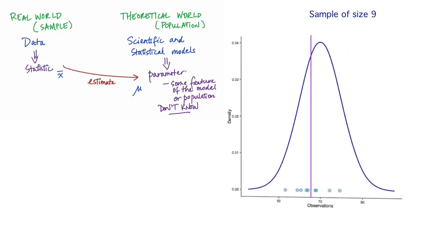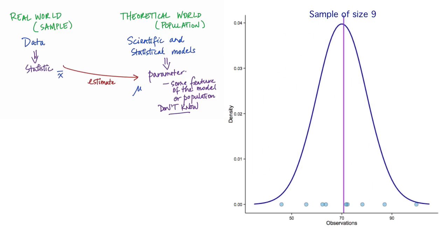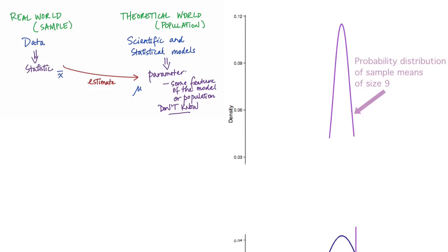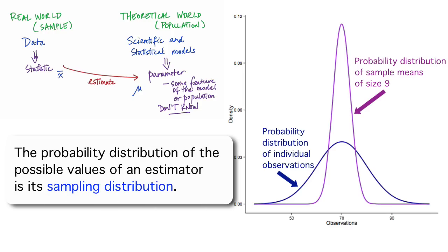Of course, if we had taken another random sample of data we'd get a different value for x-bar, and if we had taken yet another sample we'd get yet another value for the average. This purple probability distribution shows the behavior — in terms of probability — of all the different sample means that it's possible to get. In previous videos, we investigated how this probability distribution for the sample means compares to the probability distribution of the individual observations. Knowing the probability distribution of the sample means is an important component of the process of statistical inference.